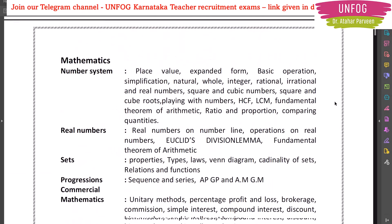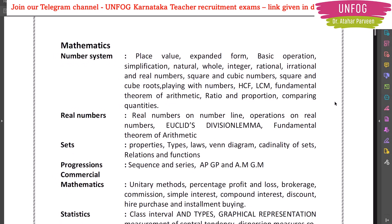Let us start with the mathematics syllabus. As I have been telling you right from the first discussion video of GPSTR, both CB method aspirants and PM method aspirants should prepare for maths and science. Science includes physics, chemistry, and biology. That is how the exam pattern is for GPSTR.